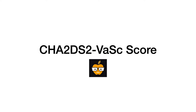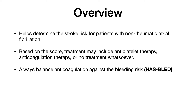This video will teach you about the CHADS2-VASC score, which helps us determine the risk of stroke for patients with non-rheumatic atrial fibrillation. You calculate a score and then determine whether a patient needs antiplatelet therapy, anticoagulation therapy, or no treatment. If anticoagulation is needed, you always need to balance it against the increased risk of bleeding — and to do that, you calculate something called a HAS-BLED score, which will be covered in a separate video.